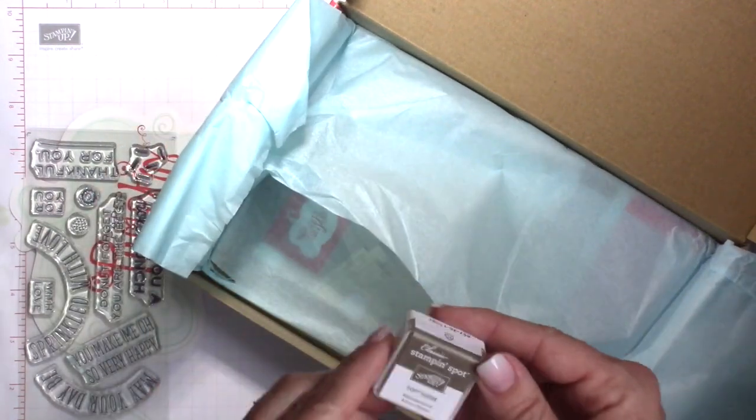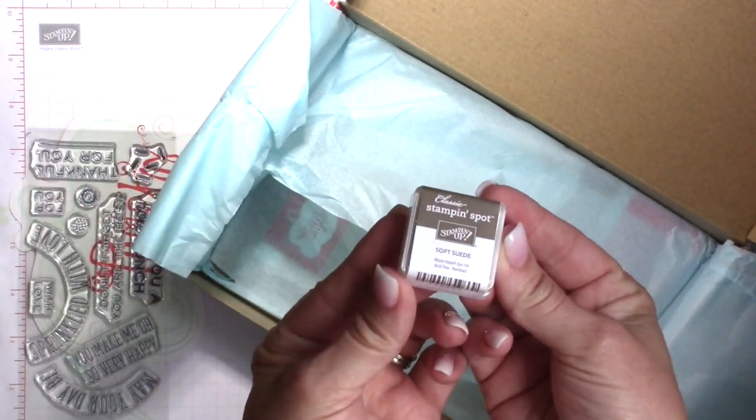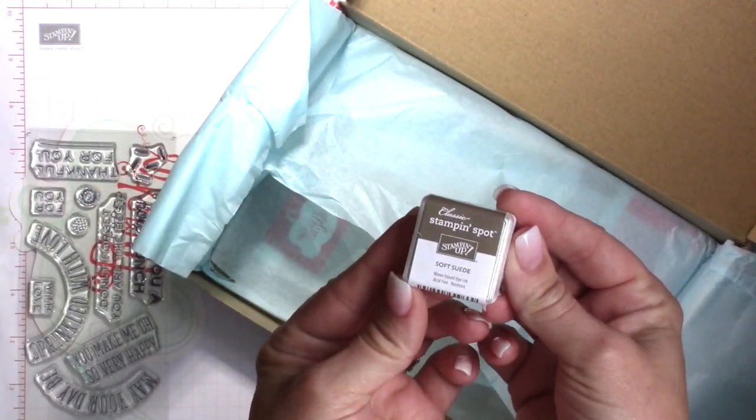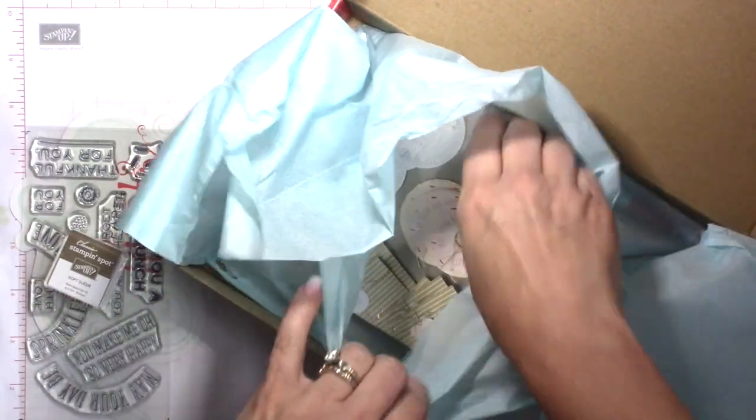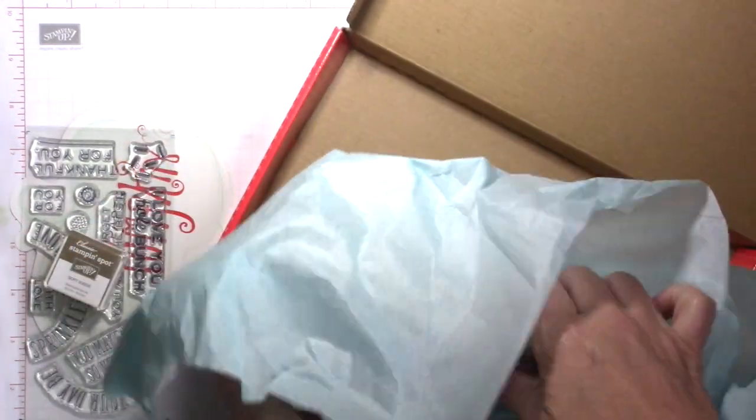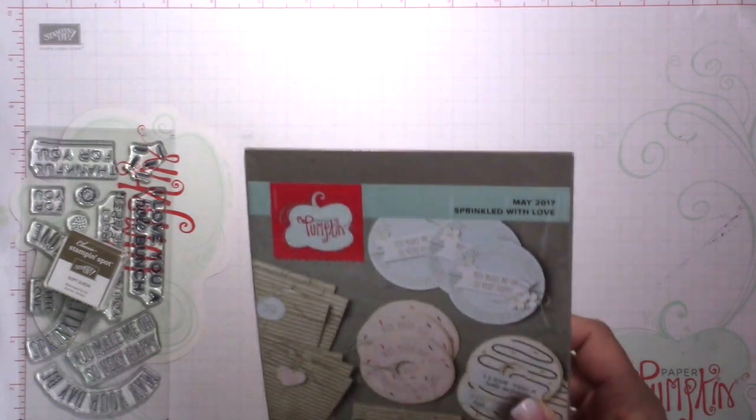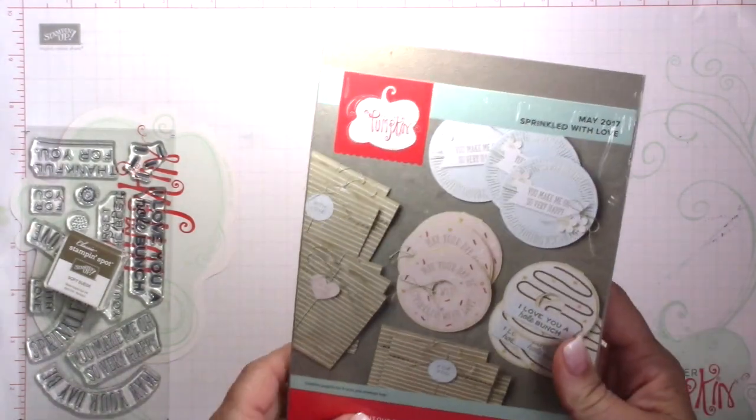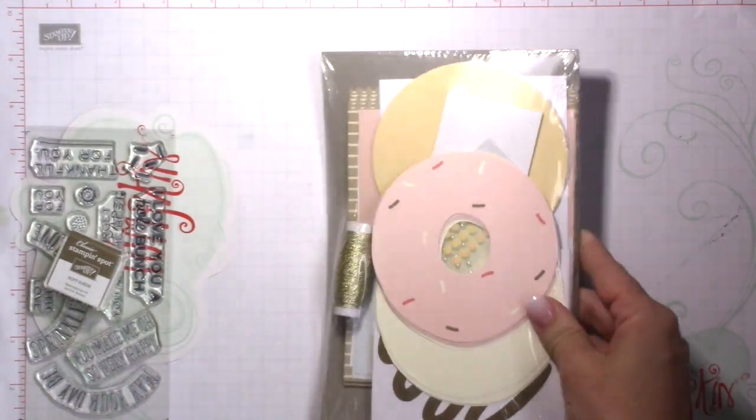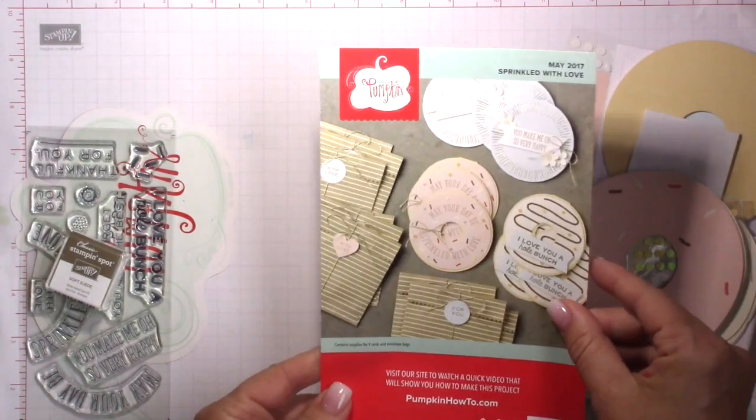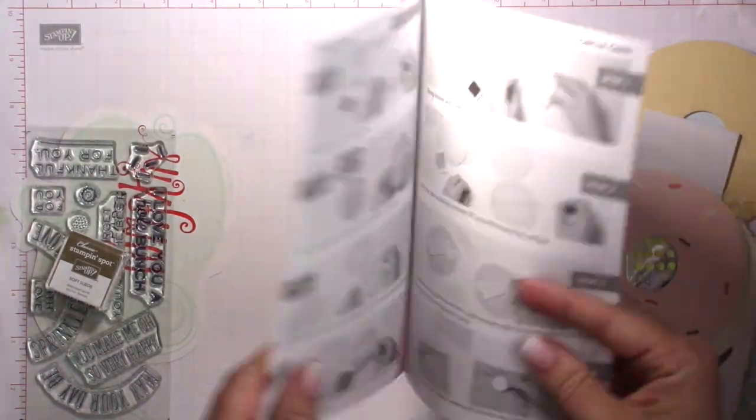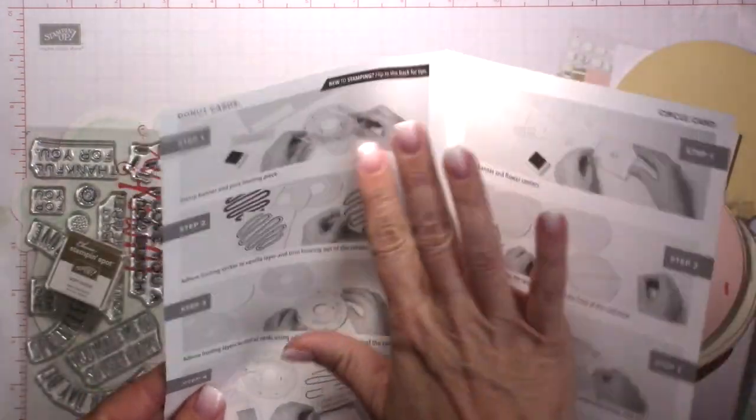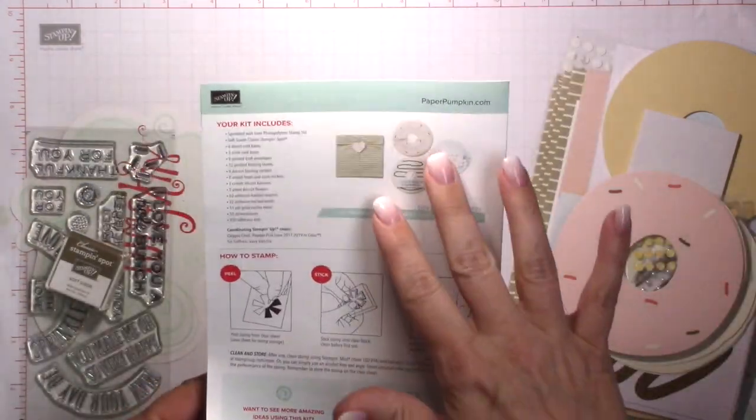And we receive at least one Stampin' Spot a month, so this month we are getting Soft Suede. And the nice thing is that each month it's a different color, so color does not repeat in a calendar year. So if you subscribe for at least 12 months, you'll have at least 12 different Stampin' Spots which are perfect for taking on the go.